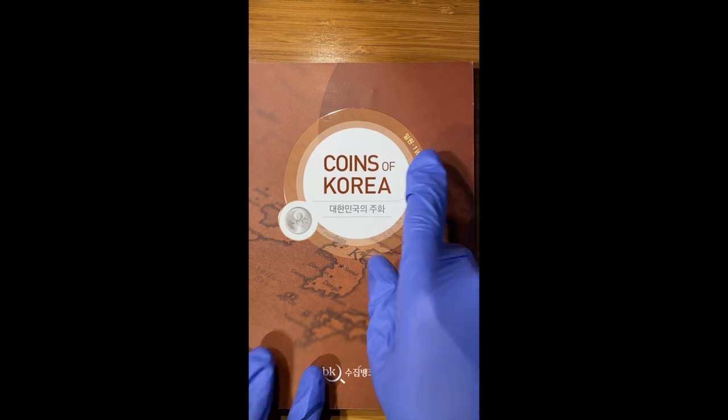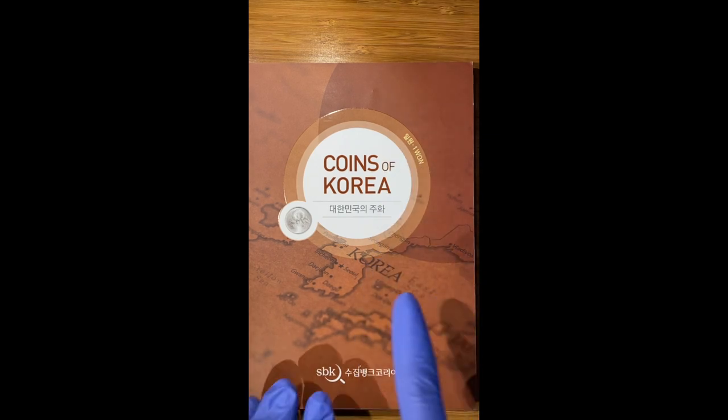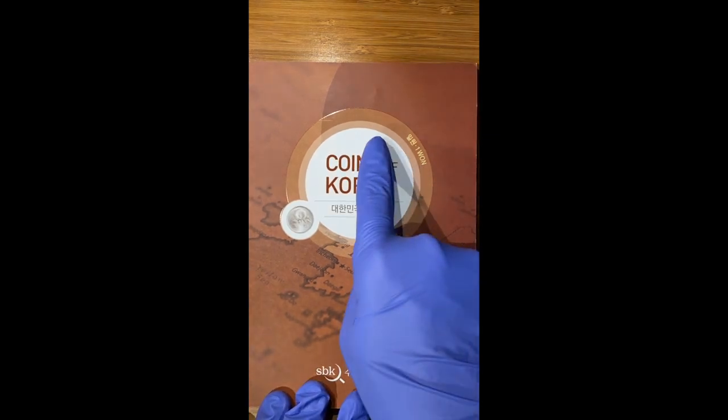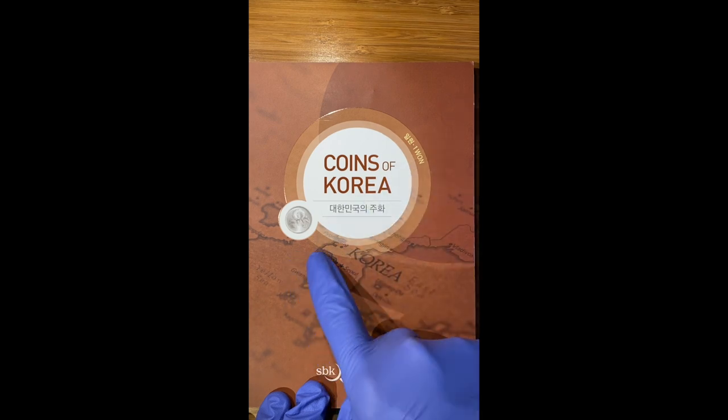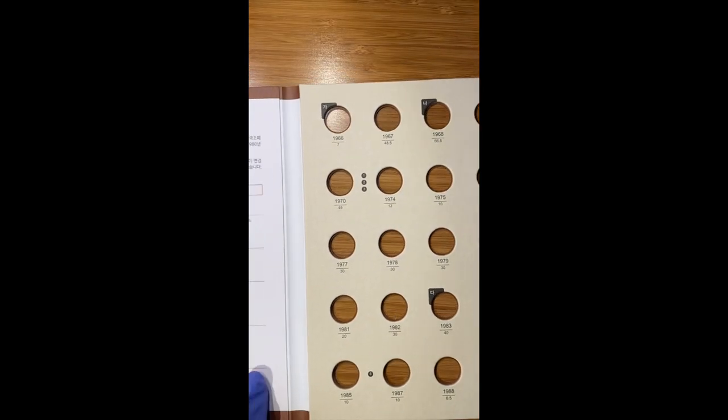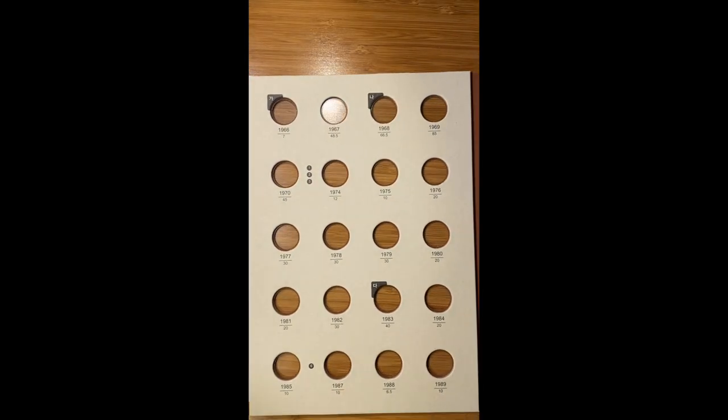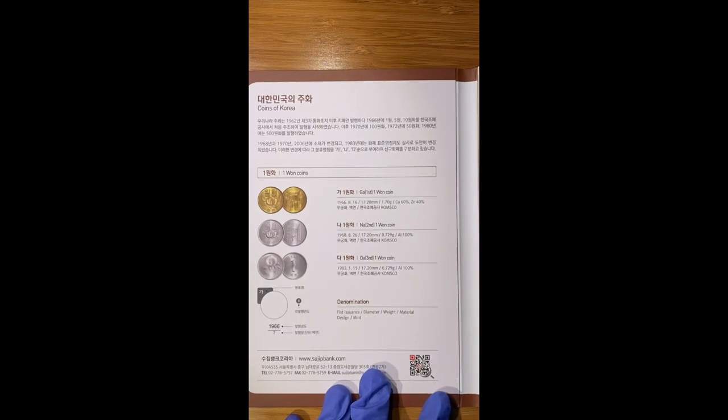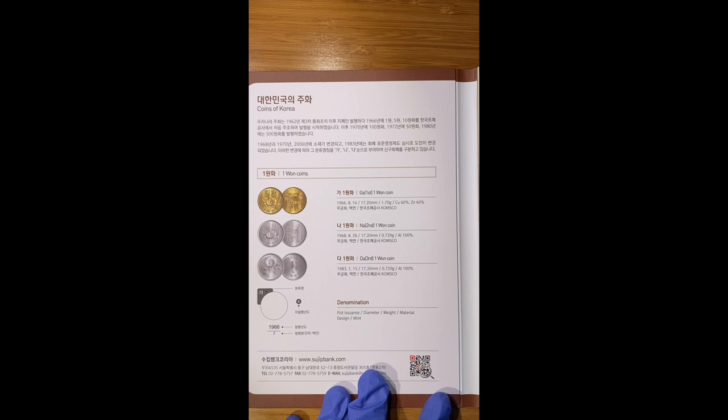Starting with the one-won folder, you can see the label right here on the front cover denoting the denomination and they have included an image of the most recent version of the coin on the left. Let's take a look at the inside of one of these one-won coin folders. I'll discuss some of the changes that they made to the 2022 versions of these folders. Some of the folders have the same layout as the older versions and some are different. This one-won folder appears to be in the same layout as the older version.